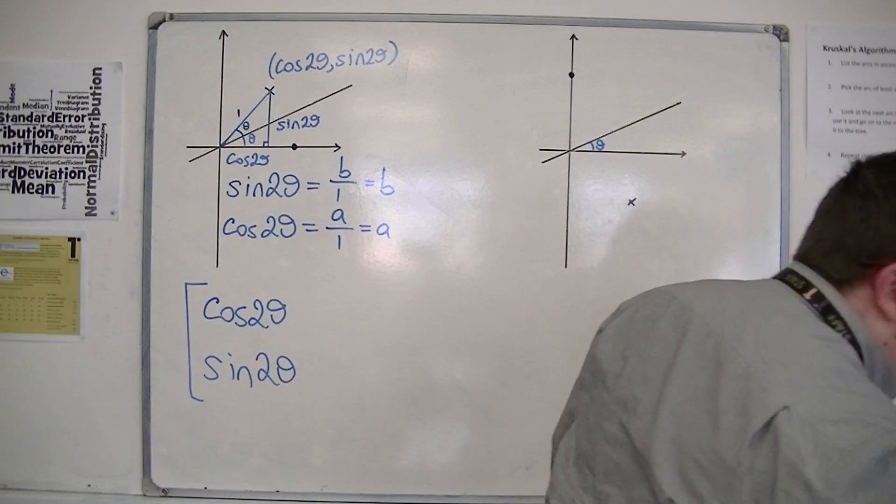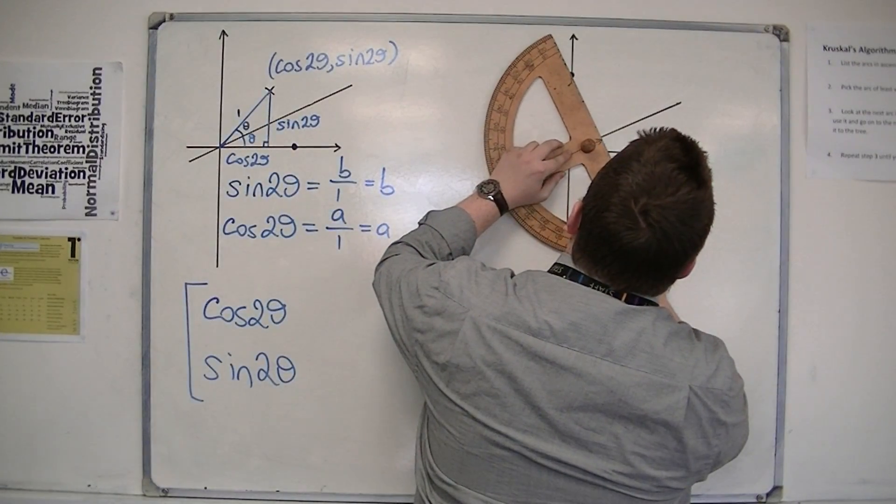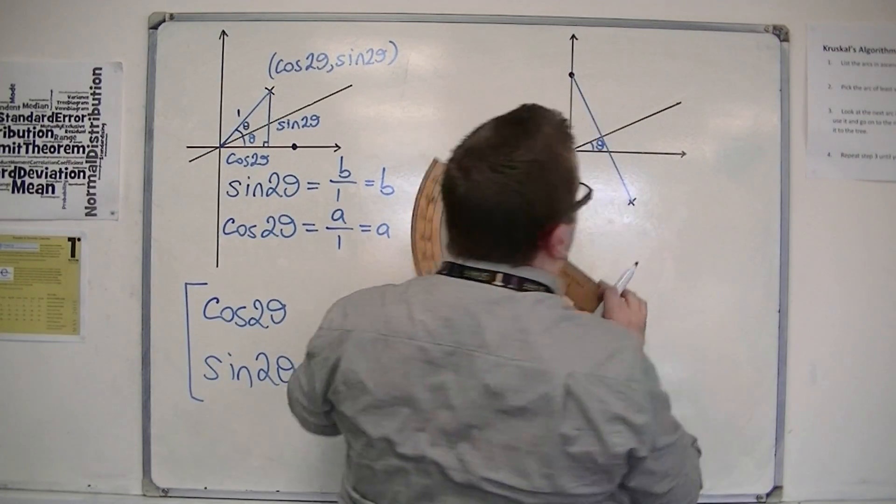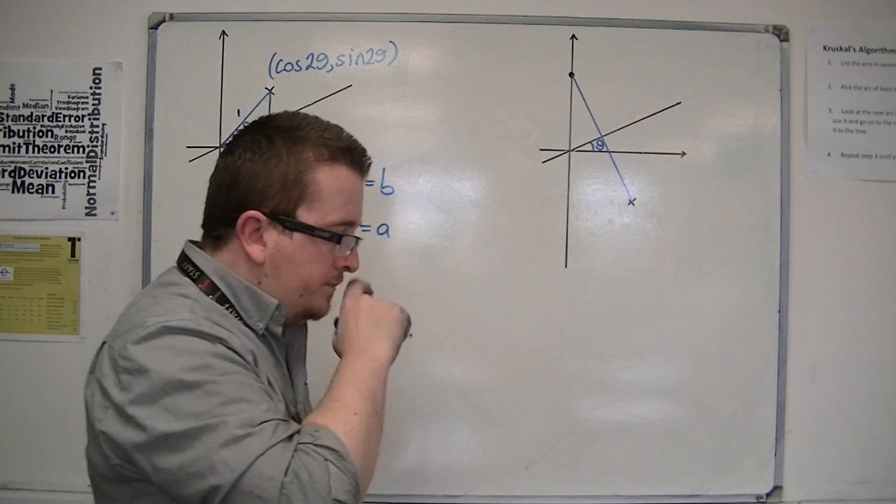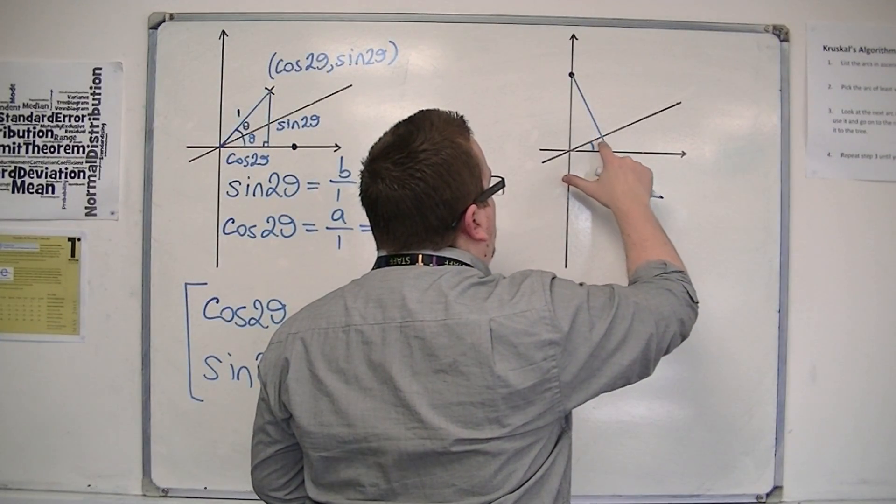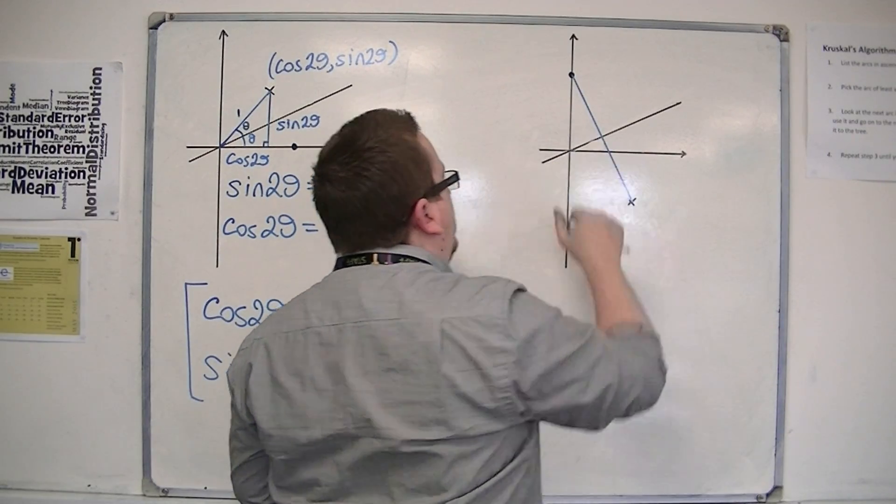So if I now draw a line between those two points, like so. Actually, this diagram's going to get quite small, so I'm just going to remove that theta. We'll remember that it is theta there.